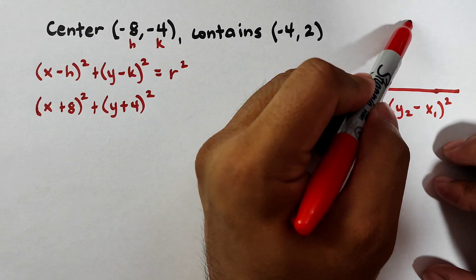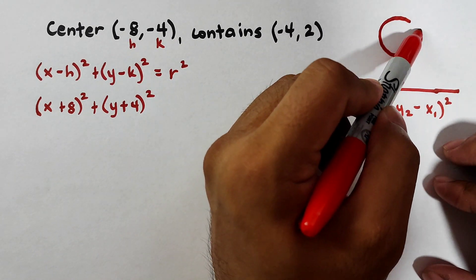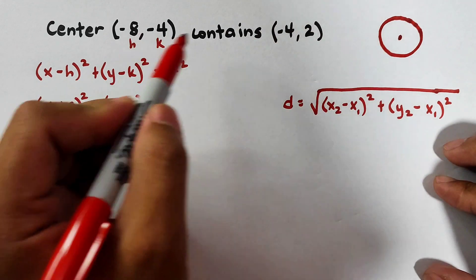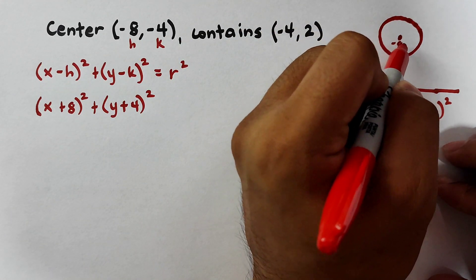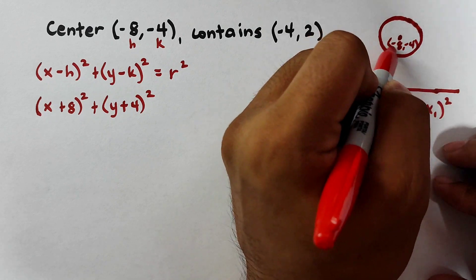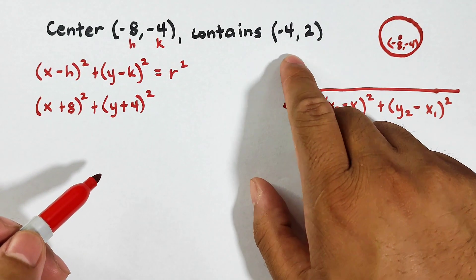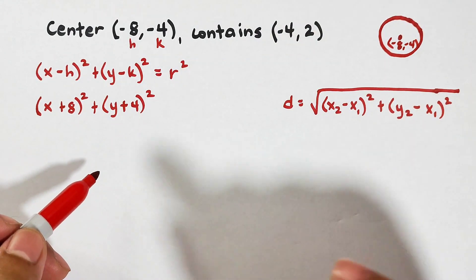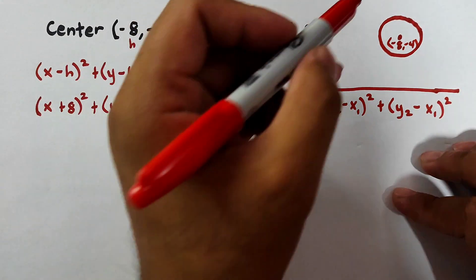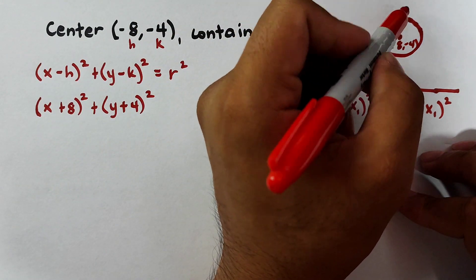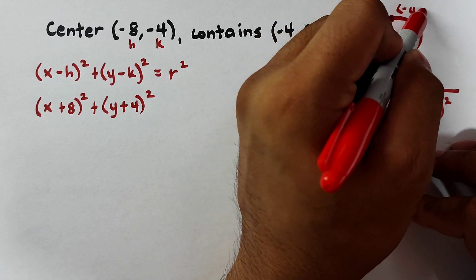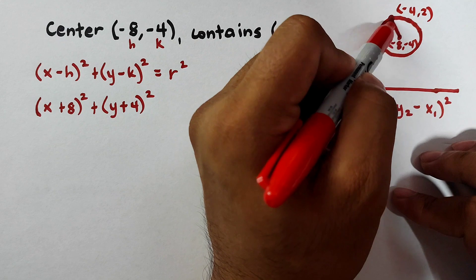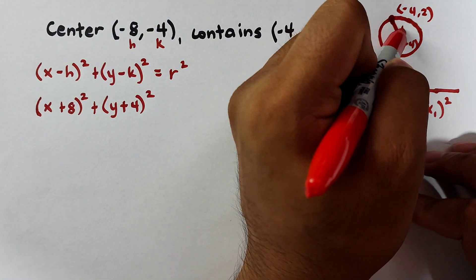Now imagine this one is a circle. This is your center. Let's say this is negative 8, negative 4. Let's say it contains negative 4, 2 or it passes through this point. Let's say it's here. The negative 4, 2.